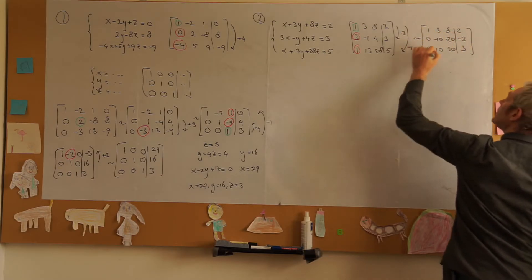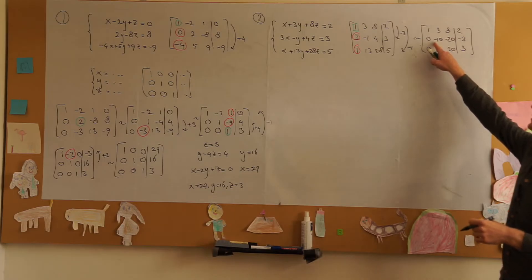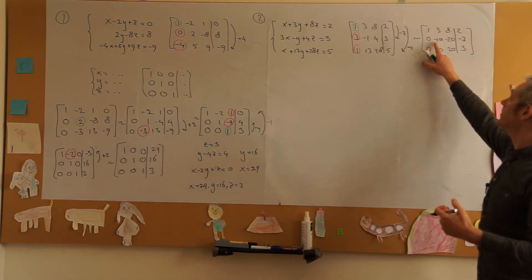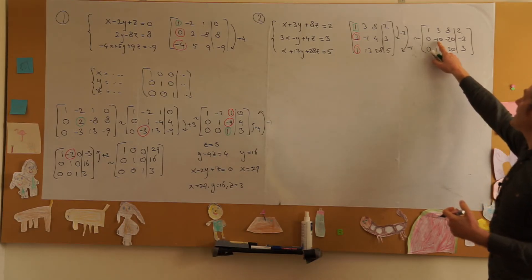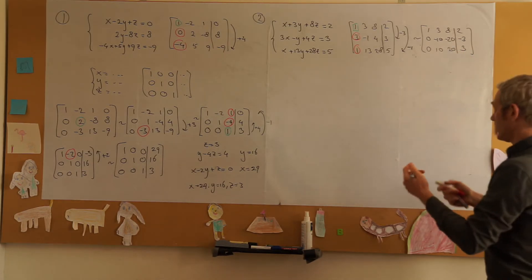Now we could continue and turn this into minus 10. However I can see that the second row and the third row only differ by a factor of minus 1.